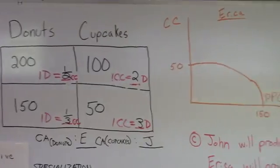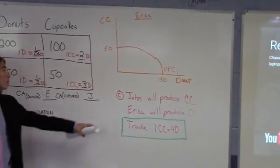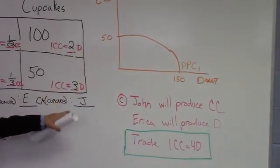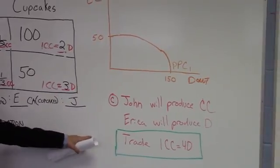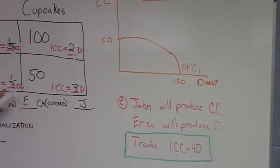All right, so, according to their comparative advantages, John's going to produce cupcakes, because he has the lower opportunity cost, which gives them the comparative advantage. And Erica is going to produce donuts, because she has the lower opportunity cost in donuts.